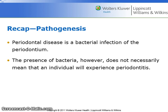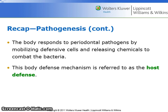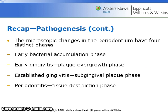A recap of pathogenesis: Periodontal disease is a bacterial infection of the periodontium. The presence of bacteria, however, does not necessarily mean that an individual will experience periodontitis. The body responds to periodontal pathogens by mobilizing defensive cells and releasing chemicals to combat the bacteria. This body defense mechanism is referred to as the host defense or host response. The microscopic changes in the periodontium have four distinct phases: early bacterial accumulation, early gingivitis, established gingivitis, and periodontitis.